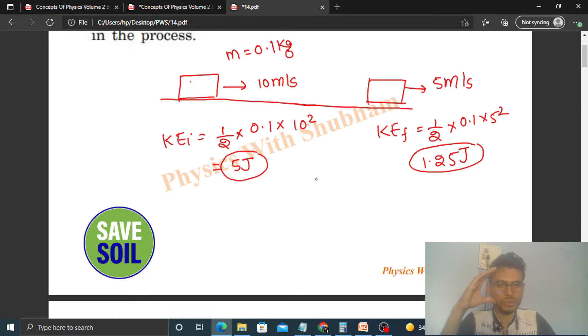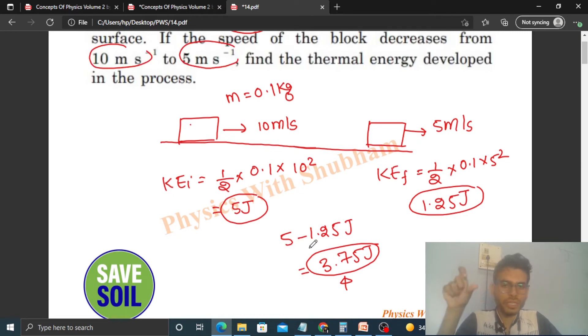How much did the kinetic energy decrease? That is 5 minus 1.25 joules, which equals 3.75 joules. So this decrease in kinetic energy will be reflected in terms of thermal energy. The heat generated will equal the decrease in kinetic energy.